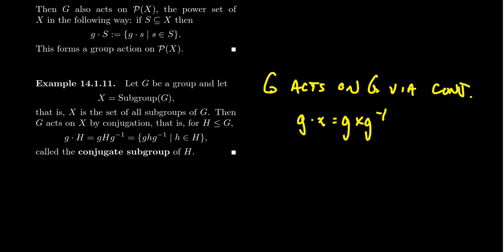we can then extend G to act upon the power set of G. That is, if we take subsets of the group, we can conjugate those subsets and that would be a group action. But we don't want the whole power set. We actually want to restrict it to a very important subset of the power set, which is the collection of subgroups. So X is the set of all subgroups of G.